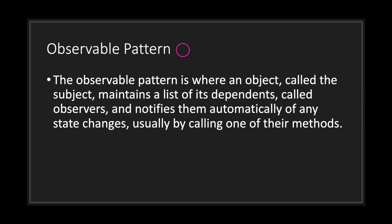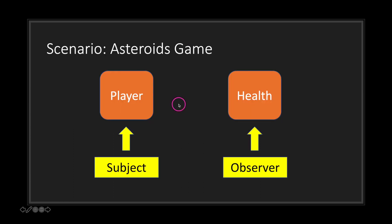The observable pattern is where an object — called the subject — maintains a list of its dependents, called observers, and notifies them of state changes, usually by calling one of their methods. If we put our game into a flow diagram, our player is the subject and the health script is the observer.